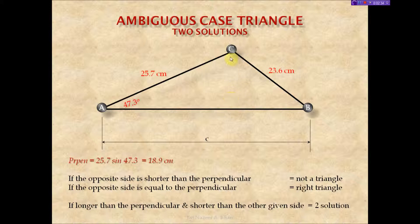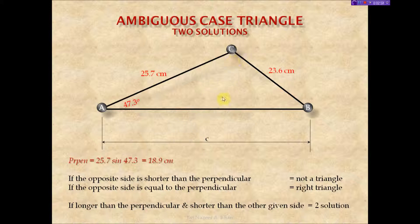If the side is exactly the length of the perpendicular, then we'll have a right triangle. So we need to calculate the perpendicular. Opposite over hypotenuse is the sine function, and when you resolve that you will get 18.9 centimeters. So we've solved for the perpendicular — it is 18.9 centimeters.